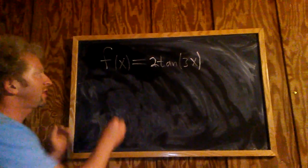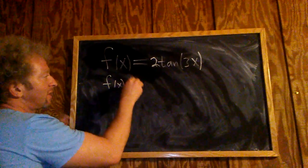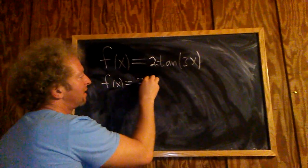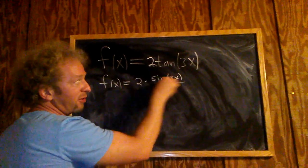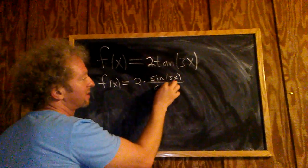Solution. The first thing you want to do is write it in terms of sine and cosine. So you can write this as 2 times sine(3x) over cosine(3x).